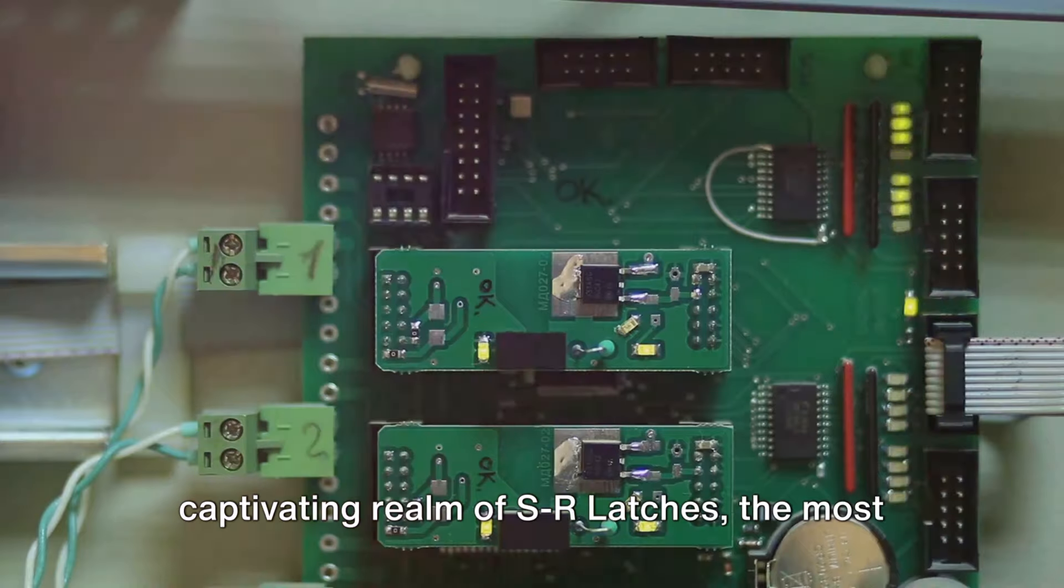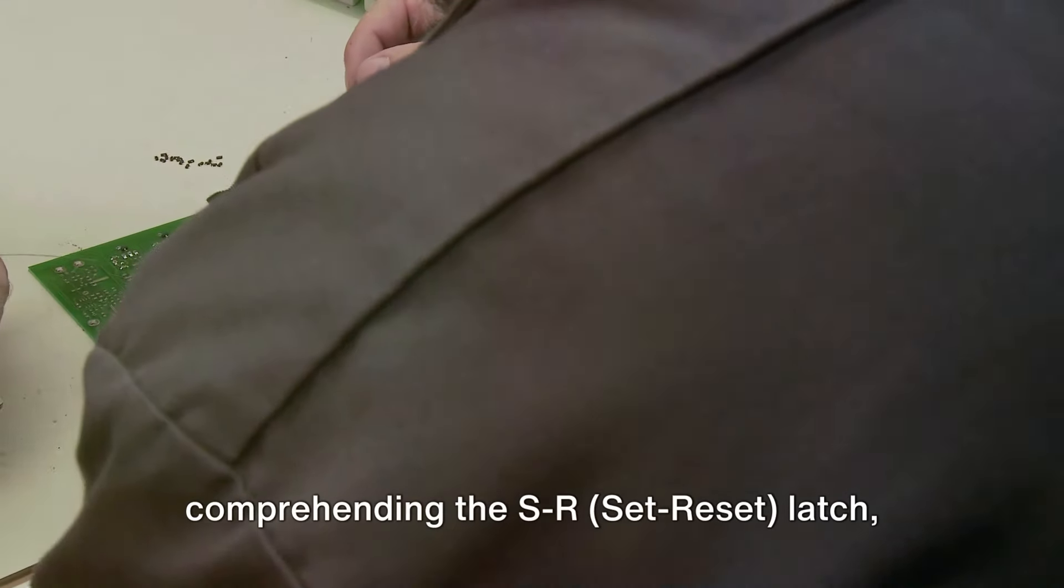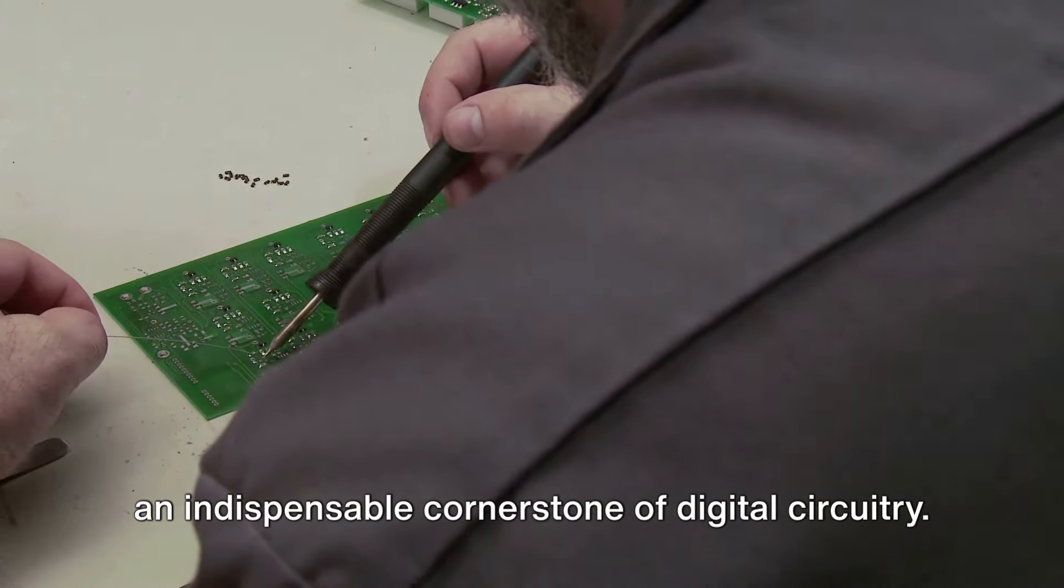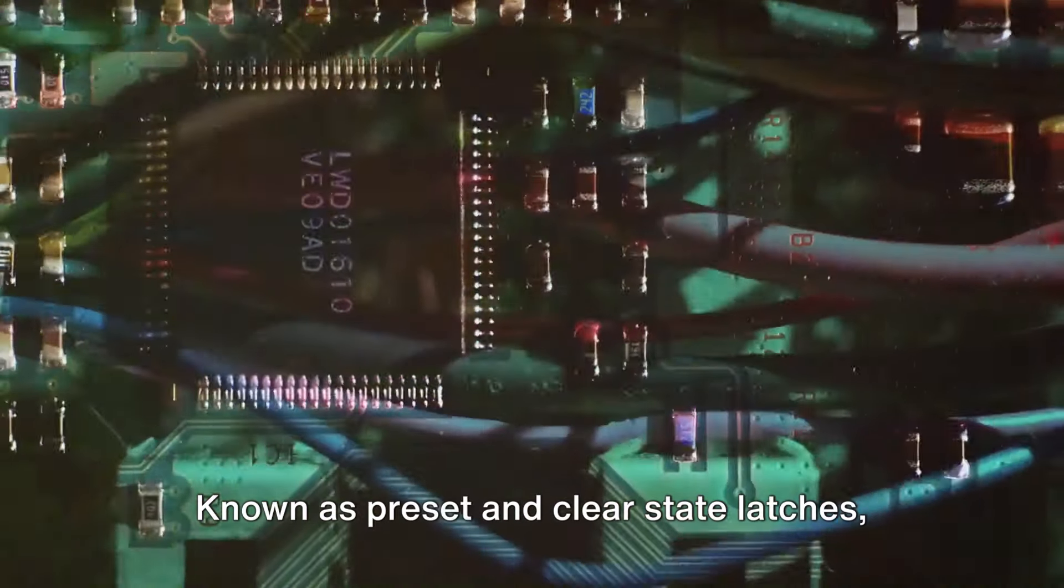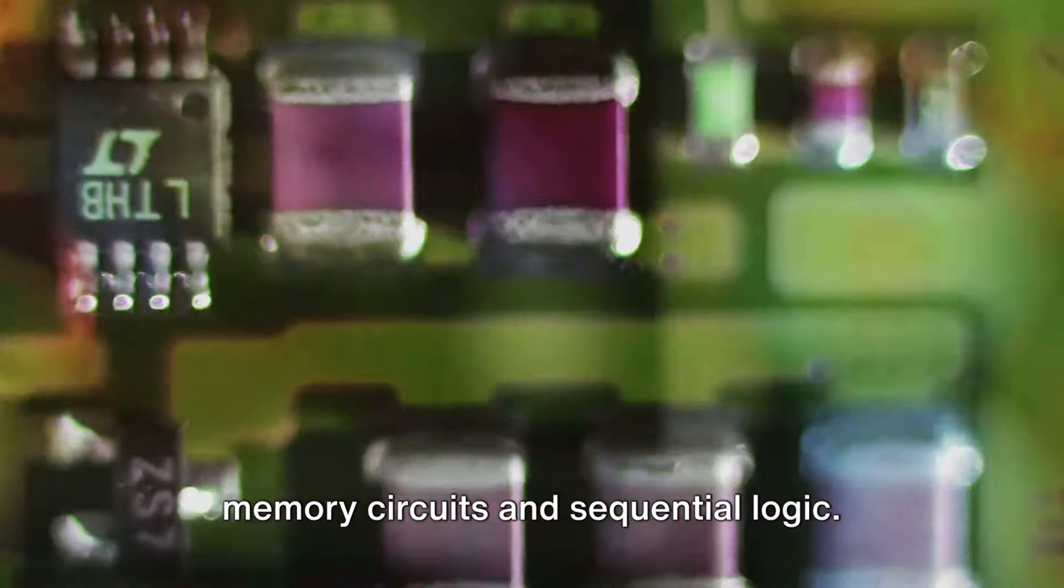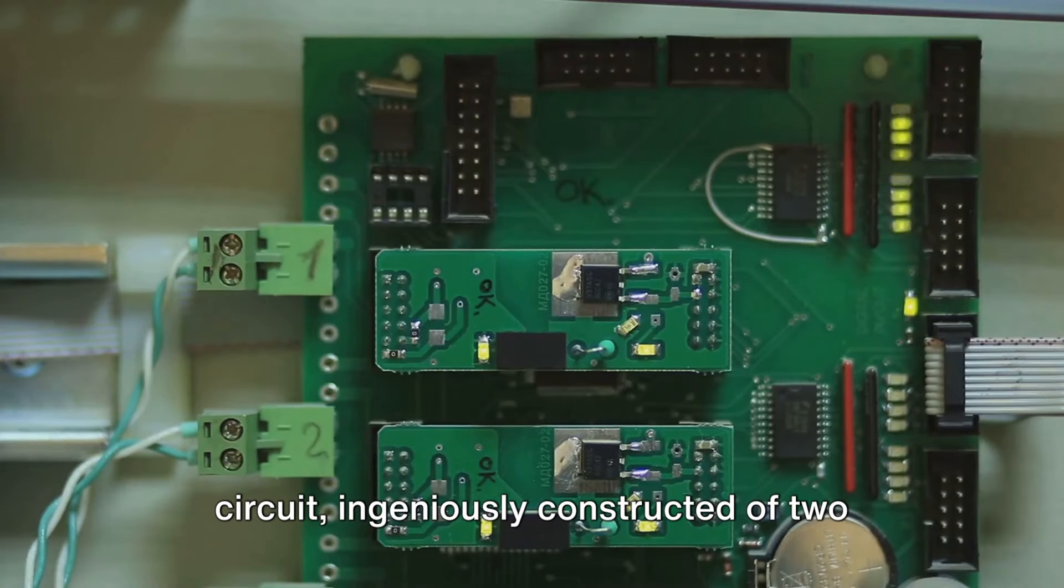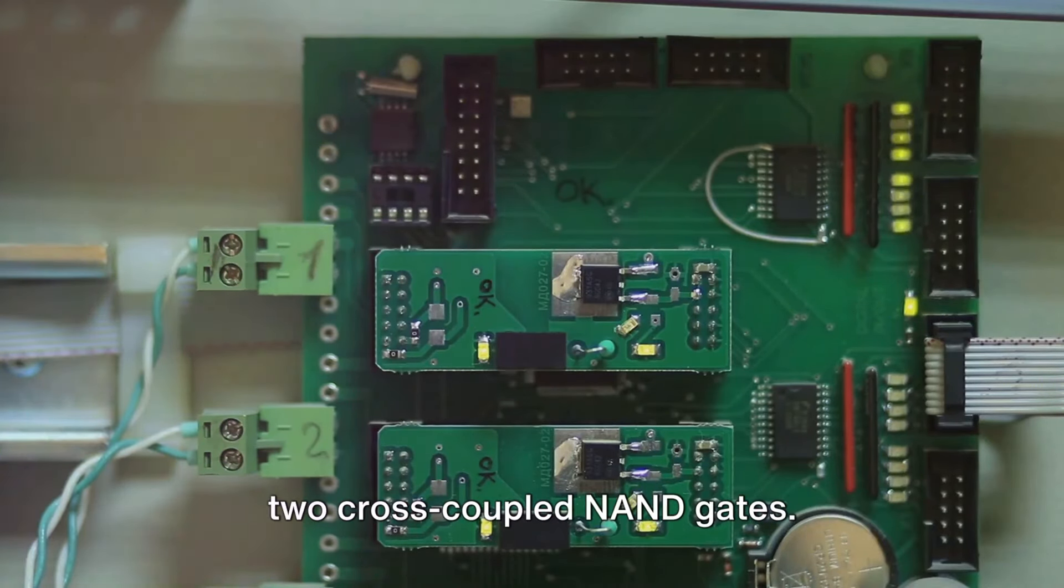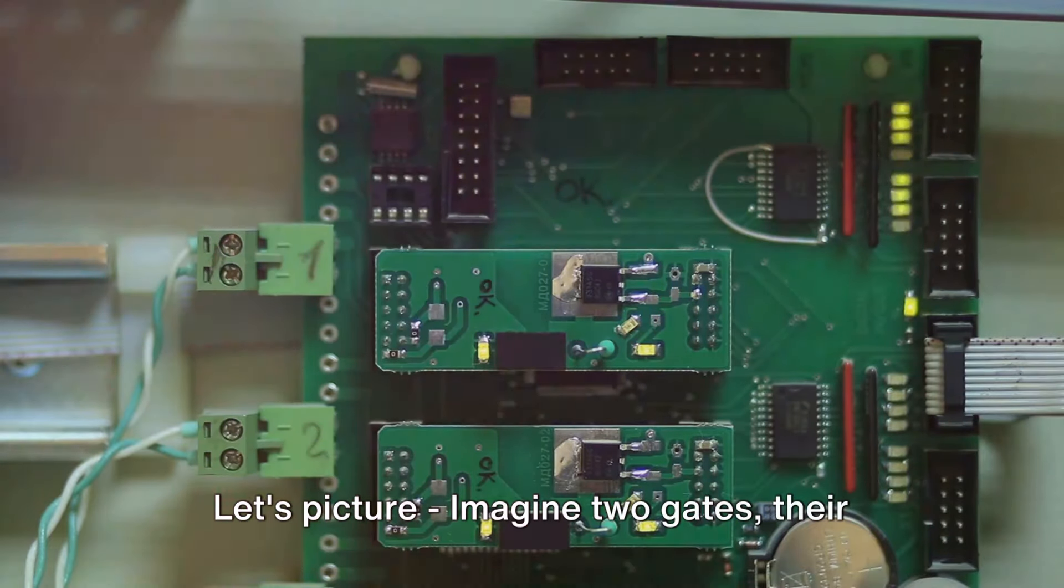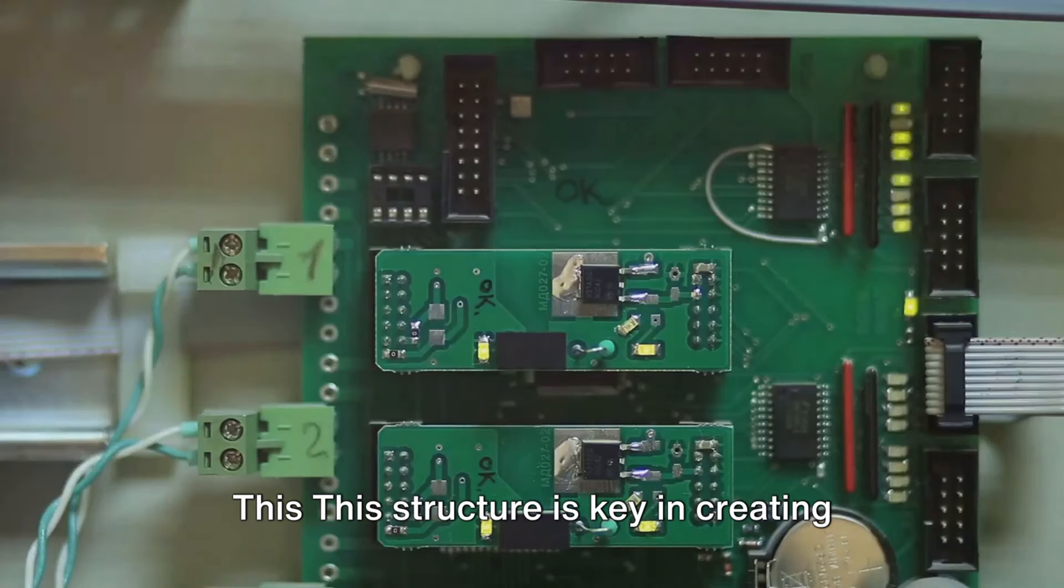Today, we're going to plunge into the captivating realm of SR Latches, the most basic form of latch systems. We'll embark on our voyage by comprehending the SR Set Reset Latch, an indispensable cornerstone of digital circuitry. Known as pre-set and clear state latches, SR Latches are the pulsing heart of memory circuits and sequential logic. To dive deeper, an SR Latch is a circuit ingeniously constructed of two cross-coupled NOR gates, or alternatively two cross-coupled NAND gates. Let's picture, imagine two gates, their outputs connected to the other's input, forming a feedback loop. This structure is key in creating the latch mechanism.